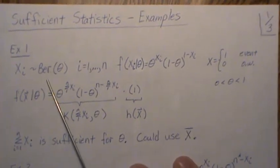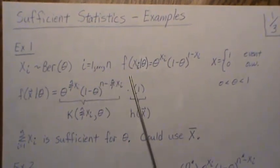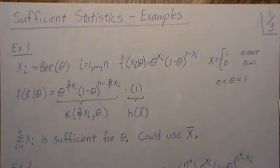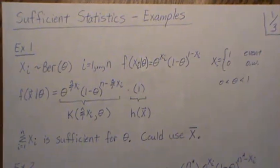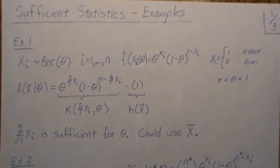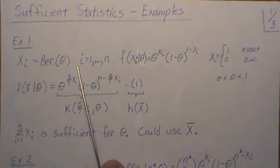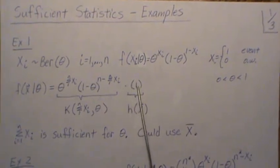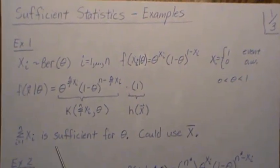In Example 1, we let Xi be a Bernoulli distribution with sample size N. The probability mass function for a Bernoulli is given, where Xi is 1 if an event occurs and 0 otherwise. The joint density is the product of the N marginals, and we just sum the exponents. Using the Fisher-Neyman factorization theorem, this piece is a function of theta and the data, but only through the statistic — the sum of the Xi — and multiplying by 1 gives the H function. So the sum of the Xi is sufficient for theta.